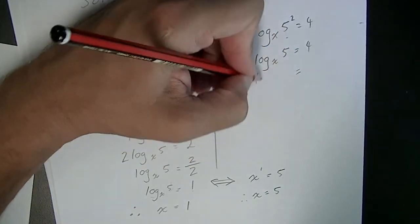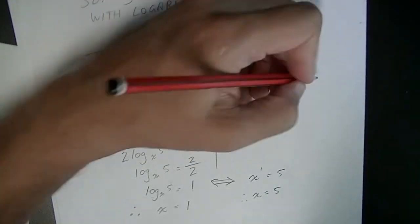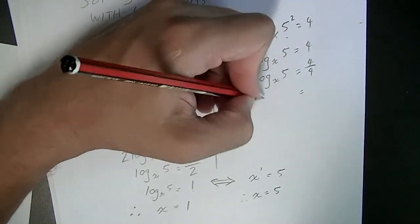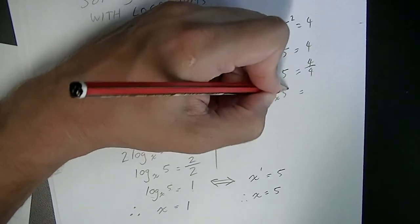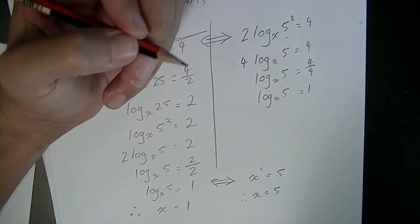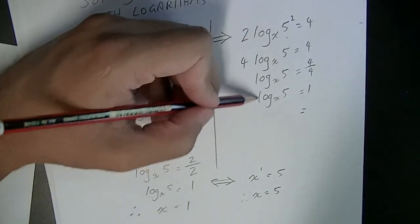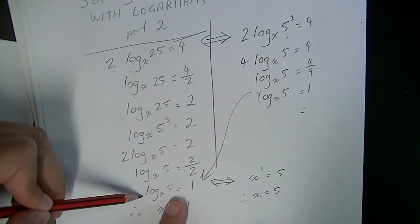That 4 will come down here, so 4 divided by 4, that will give us log base x of 5 equals 1. And from there we're at the same stage we were at here anyway.